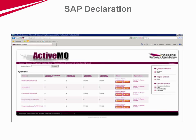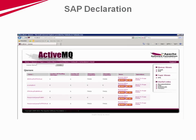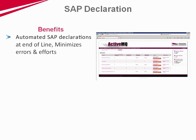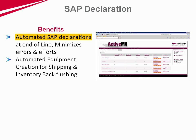MES automatically triggers production booking to the SAP system based on vehicle tracking at specified locations and shops, thereby automating equipment creation and back-flushing for accounting and inventory management.